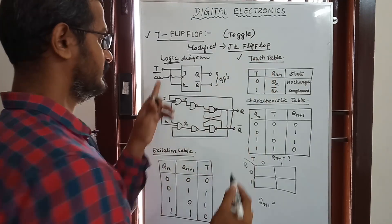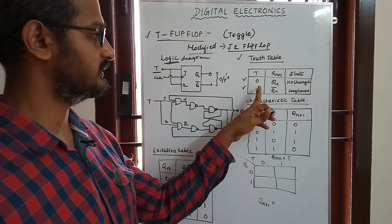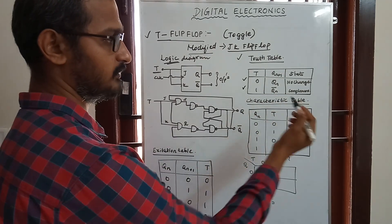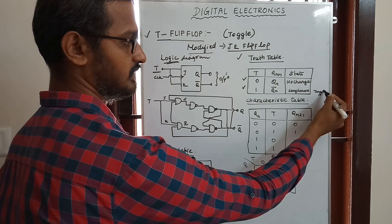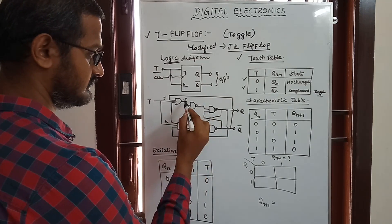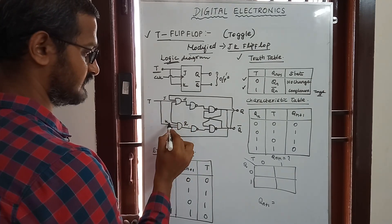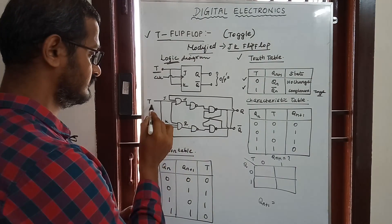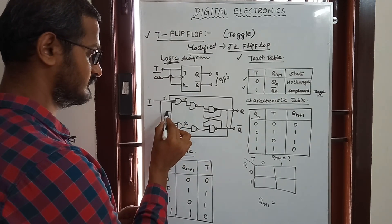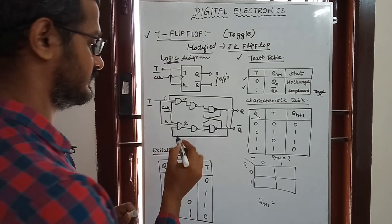If you want to add one input: when T is 0, the output is Qn — no change. When T is 1, the output is Qn bar — it is complementary and toggles. You can see the JK flip-flop. Here is the SR flip-flop with SR input, and here is the JK flip-flop — you can see it in previous videos. So when J and K are joined together, it becomes the Toggle flip-flop. This is the clock. That's all about this circuit diagram of the T flip-flop.